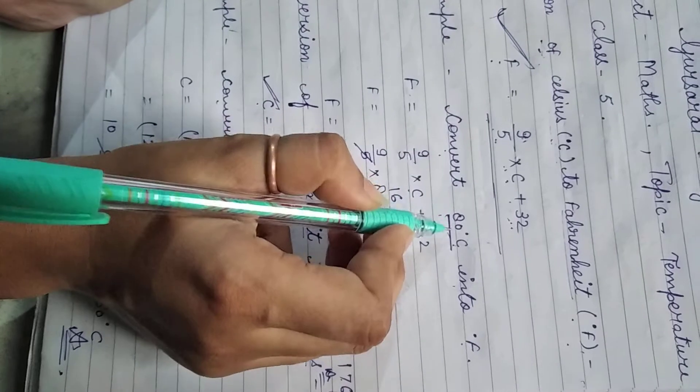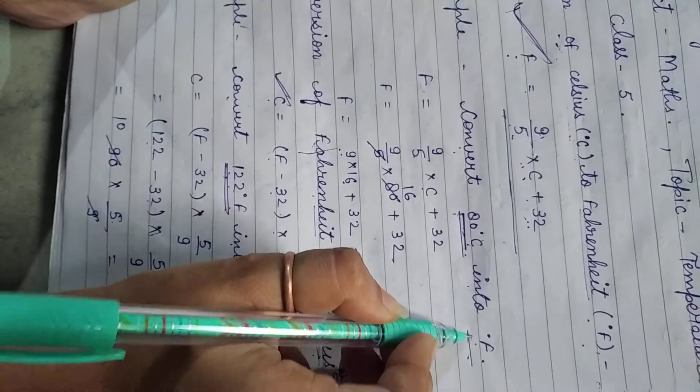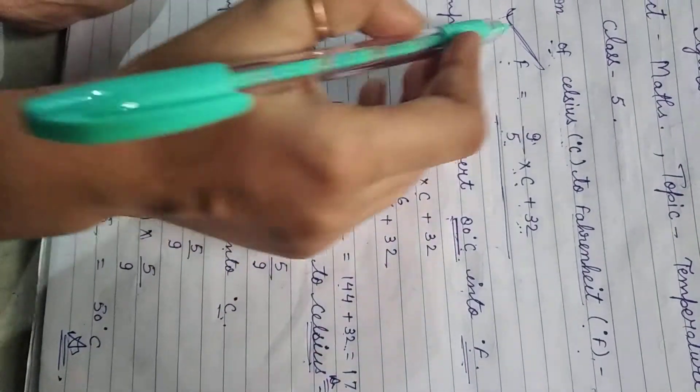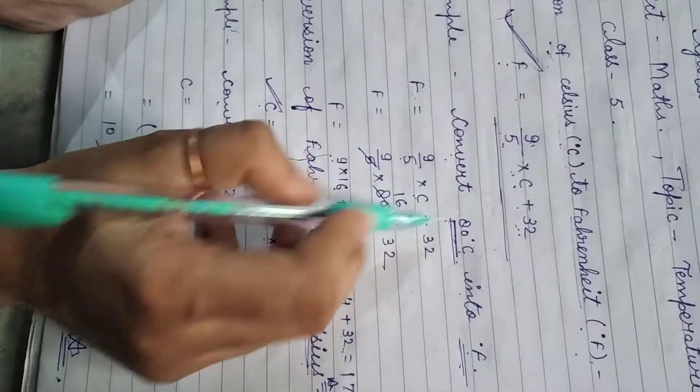Example: convert 80 degrees Celsius into Fahrenheit. We will use this formula: F equals 9 upon 5 into C plus 32.